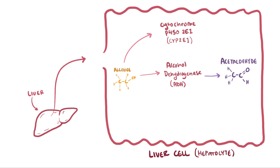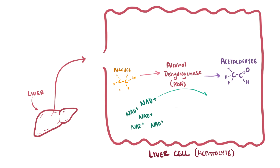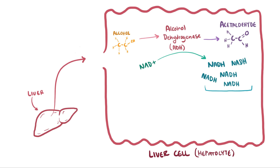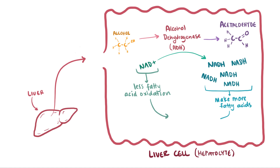When the ADH enzyme is used to convert the alcohol, it needs another compound called NAD+, which is then converted into NADH. As NADH levels increase and NAD+ levels decrease, this has two effects: higher NADH levels tell the cell to start producing more fatty acids, and lower NAD+ levels result in less fatty acid oxidation — both of which lead to more fat production in the liver.